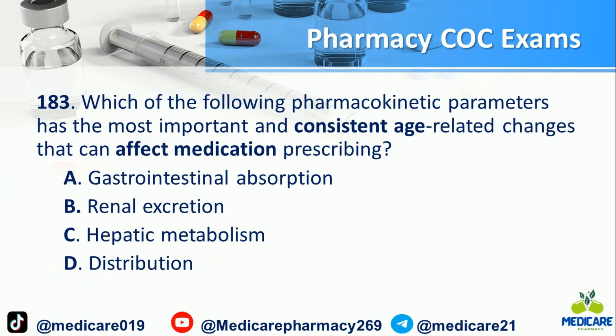Number 183: Which of the following pharmacokinetic parameters has the most important and consistent age-related changes that can affect medication prescribing? A) Gastrointestinal absorption. B) Renal excretion. C) Hepatic metabolism. D) Distribution.